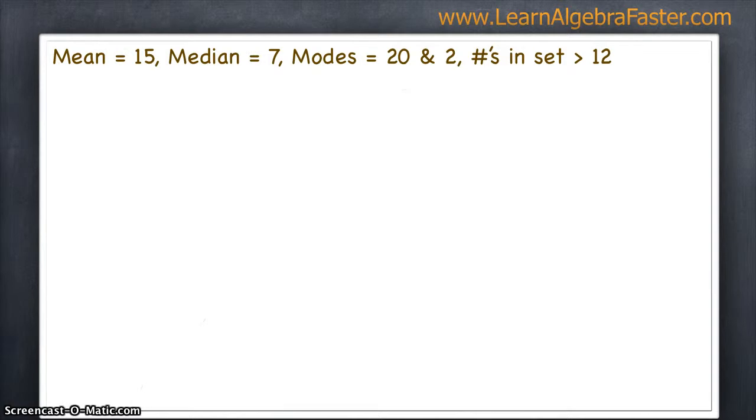And we're given the stipulation that the set has to be no less than 12. So, we need to come up with a set of numbers that satisfy all these, and it has to have at least 12 numbers in it. Since I prefer to put the median in the middle, let's go ahead and get started with that. Let's put it in the middle, and let's shoot for a set of 13. We like odd-numbered sets because we can put the median in the middle, and then build to the left and to the right. So, let's go ahead and get started with that.